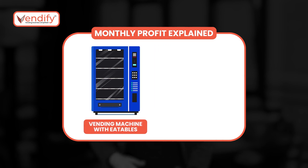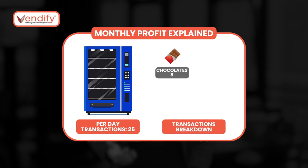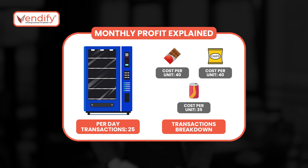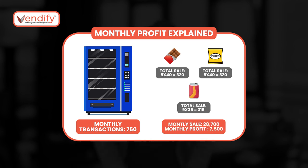Let's understand this with a simple example. You have a vending machine stocked with chocolates, chips, and cold drinks. On average, there are 25 transactions in a day — 8 chocolates, 8 chips, and 9 soft drinks. Let's assume the cost of one chocolate is 40 rupees, one pack of chips costs 40 rupees, and a soft drink sells for 35 rupees. So your per day sales is 955 rupees, which means your monthly sales will be 28,700 rupees, and out of this 28,700 rupees, your profit will be 7,500 rupees.